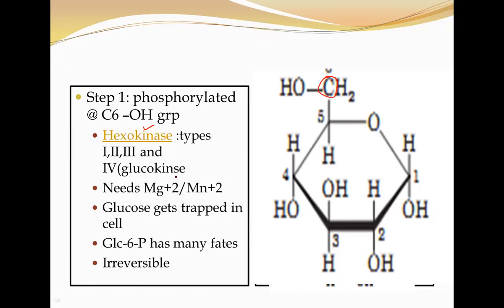Glucokinase is also known as hexokinase IV. There is a lot of difference between hexokinase and glucokinase, and it is one of the most favorite questions of examiners — where do you see glucokinase and where do you see hexokinase? We will make a separate video to discuss hexokinase versus glucokinase. As mentioned earlier, all kinases require either magnesium or manganese mandatorily.